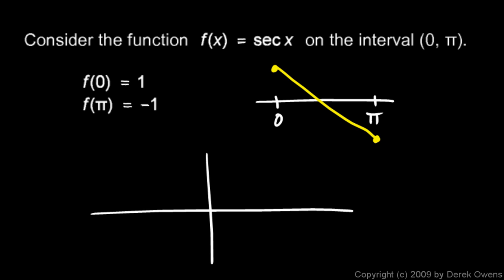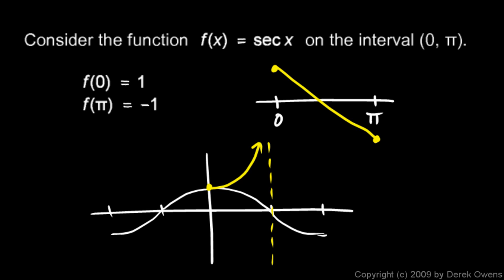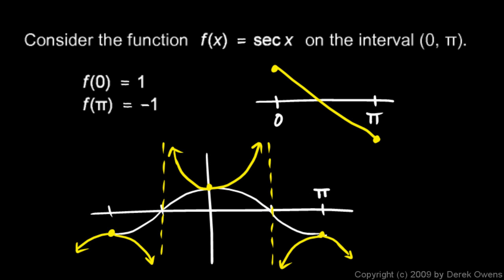The secant is the reciprocal of the cosine function. If we make a little graph of the cosine function, the secant is its reciprocal and it looks like this — notice it has an asymptote here and here. The secant function has a value of 1 at x equals 0 and negative 1 at x equals pi, but it doesn't go from this point to that point in a continuous fashion. The secant function is not continuous, therefore the intermediate value theorem does not apply.